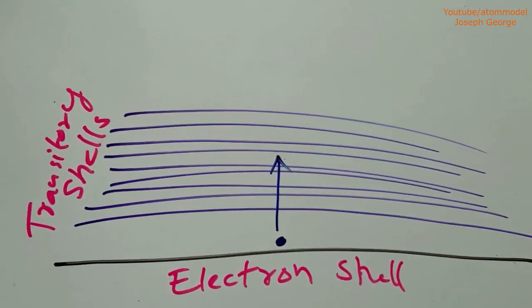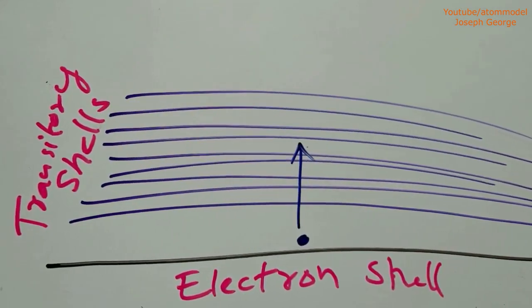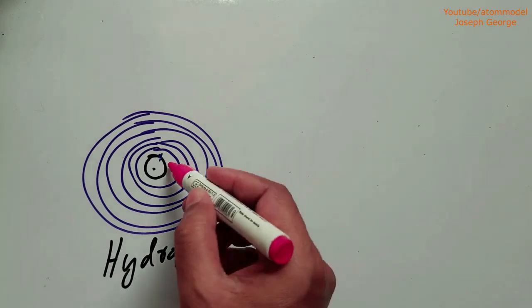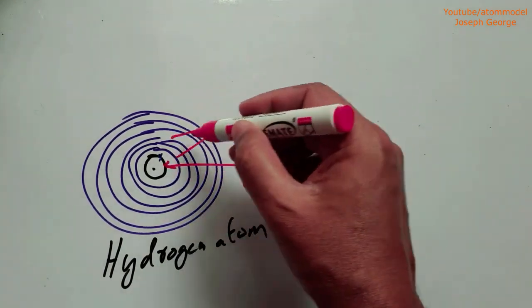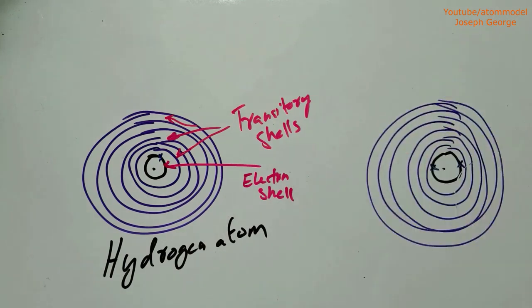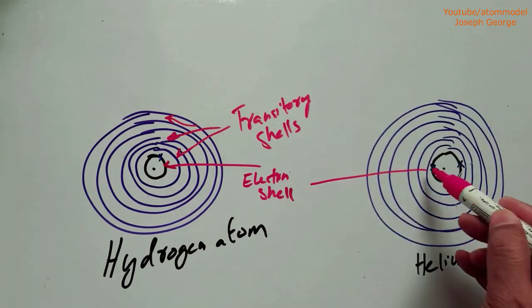Transitory shells are the regions in which the electrons are ejected from an electron shell and an atom is excited. Hydrogen and helium atoms have one electron shell and an enormous number of transitory shells. Lithium atoms have two electron shells and an enormous number of transitory shells and so on.